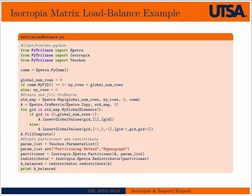That's an example of balancing a Petra vector. Now we're going to create a CRS matrix. This should look familiar — we're creating our finite difference type operator. The only difference from what we've done in the past is that this matrix is created unbalanced — the entire matrix starts off on rank zero, which you can see from how the map is created at the beginning.